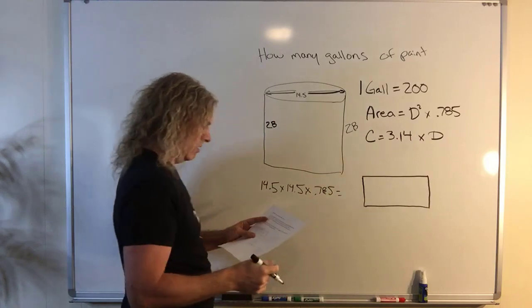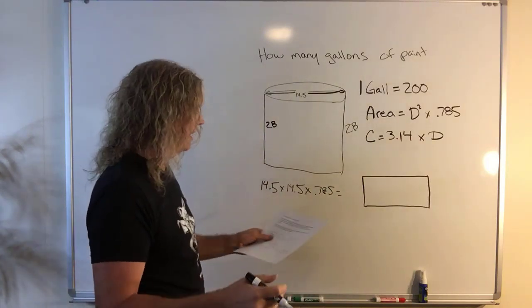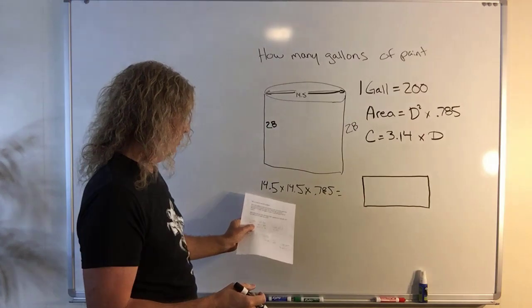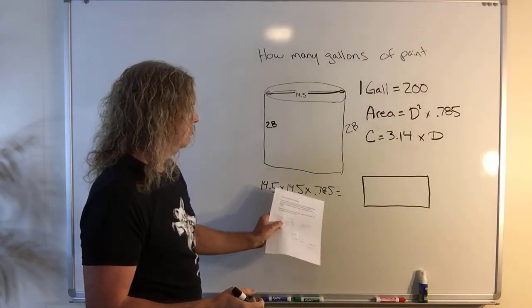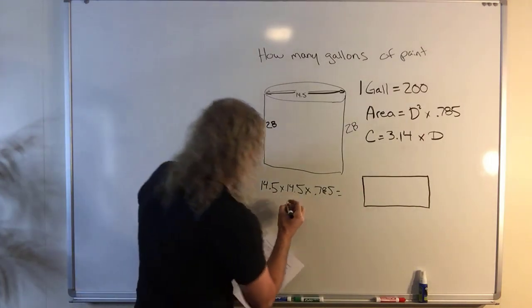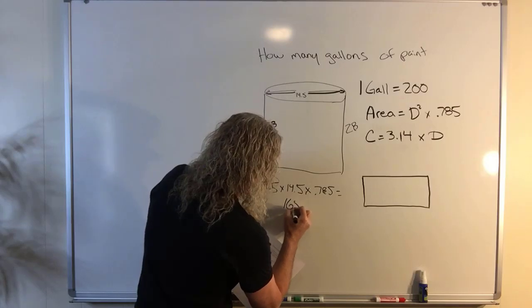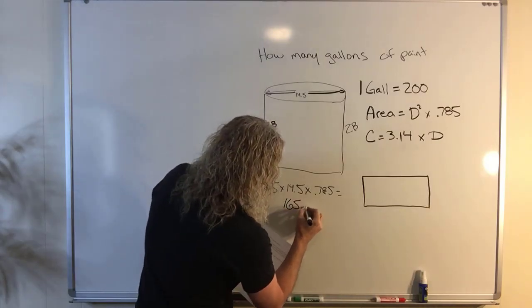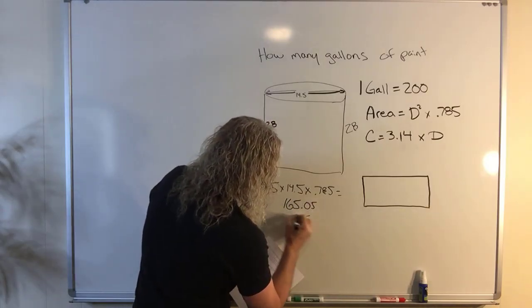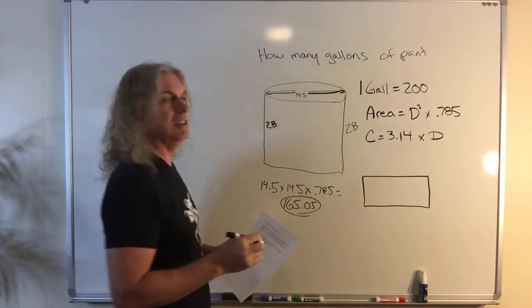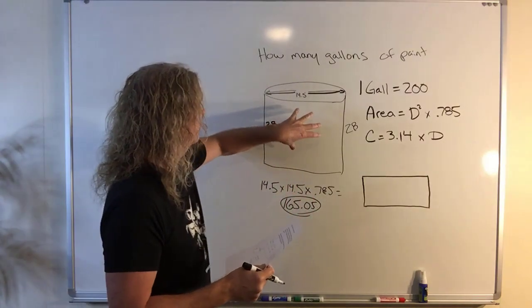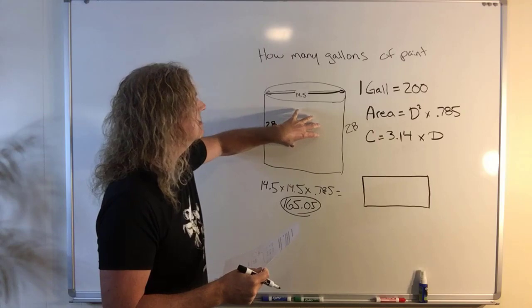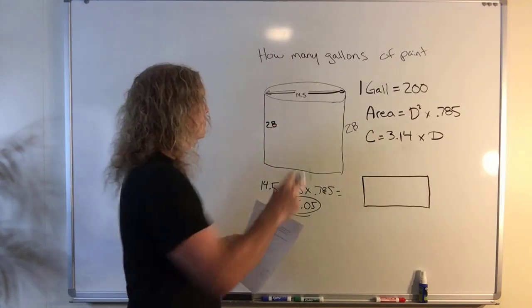And our area of the top of the tank, just by multiplying 14.5 times 14.5 times 0.785 is going to be 165.05. That's the top of the tank. Now we've got to find out the distance around the tank. To solve that, it's just a rectangle.